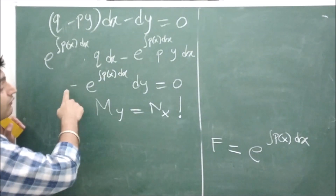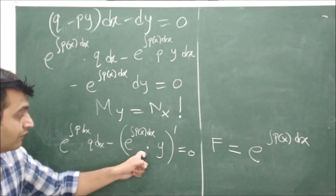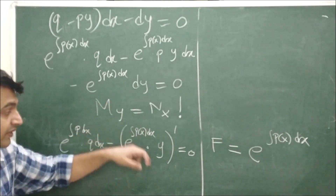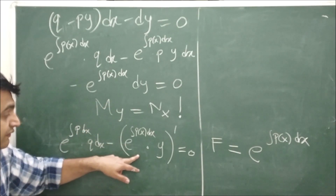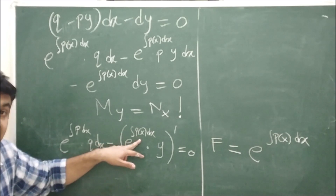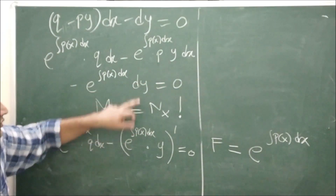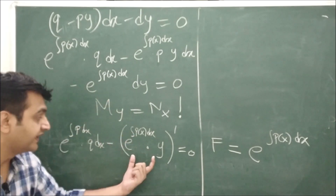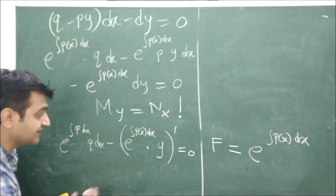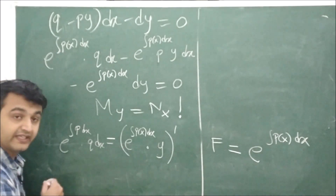Observing the second and third terms after multiplication, we recognize them as the derivative of the product e^(integral P)·y. By the fundamental theorem of calculus, the derivative of the integral is P, which matches the term appearing in the expression. So those two terms combine as d/dx[e^(integral P)·y].